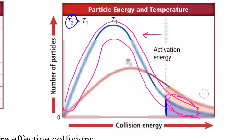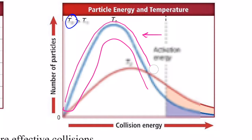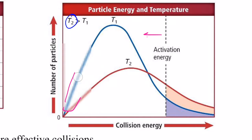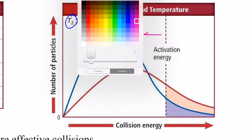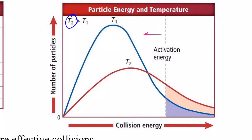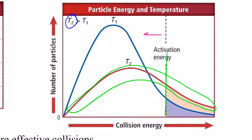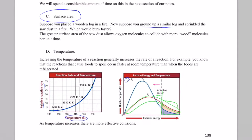Now, what if we increase the temperature to T2? Looking at the Boltzmann distribution curve for T2, the average kinetic energy increases. With the activation energy threshold shown, fewer molecules fall below it and a greater quantity now have enough energy to react and form products. So increasing temperature—and therefore kinetic energy—will always increase the rate; we get more effective collisions.